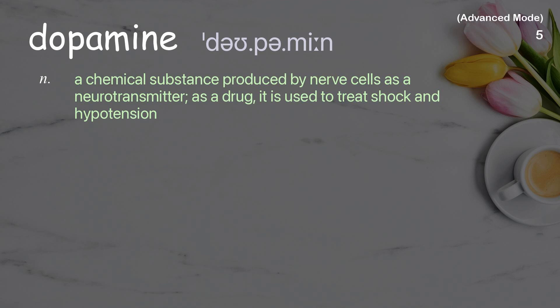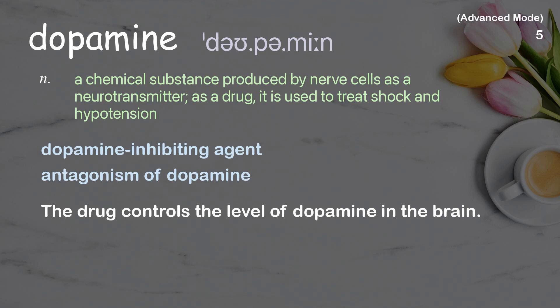Dopamine. A chemical substance produced by nerve cells as a neurotransmitter; as a drug, it is used to treat shock and hypotension. The drug controls the level of dopamine in the brain.